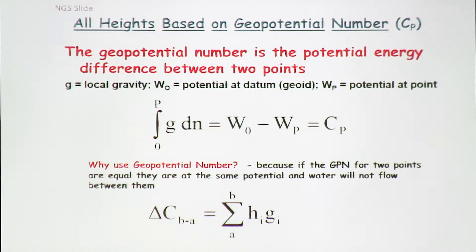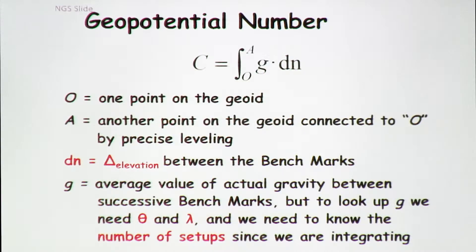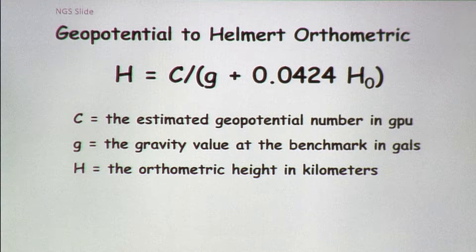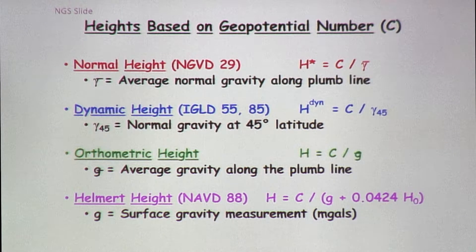But when you're out there trying to measure, you don't measure a potential difference and you don't have the gravity — all you have is the level difference. So locally, you want an orthometric height. That's just another formulation telling you that it's an integral. Here's what's important: once you get that C value — the geopotential number denoted with a C — what you do is compute an orthometric height using this gravity formula. You take the surface gravity, apply this value to it, and that gives you your Helmert orthometric height. So the geopotential number is converted to a Helmert orthometric height.